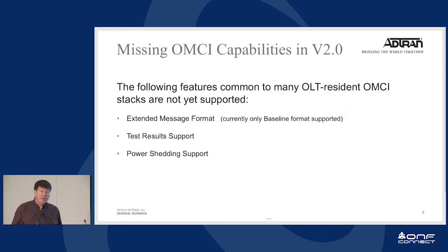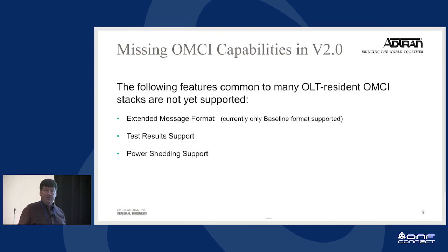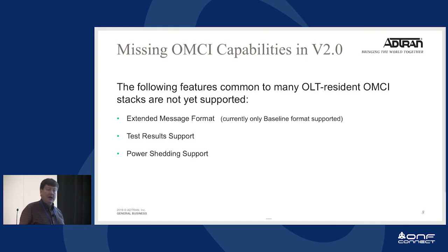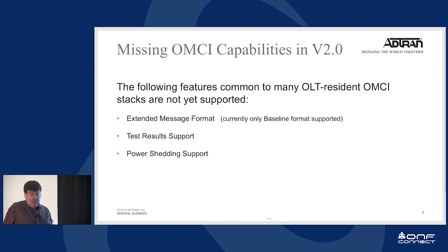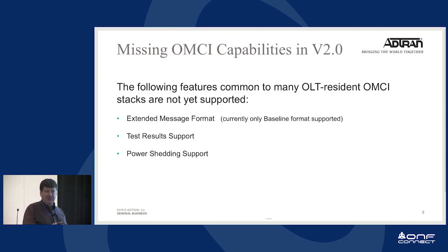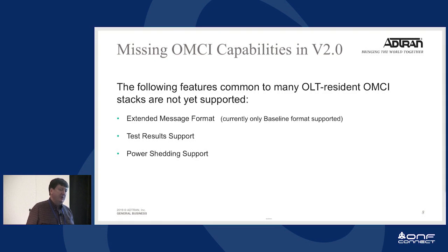Software download and activation is the ability to download new firmware to the ONU device, then commit that software, activate it, or do a rollback. If you need to download new ONU firmware to a physical device, you'd use those sequences. That's a common thing you might want to modify if your ONU has better capabilities. The ITU specifications actually give two different ways to do downloads — CIG implemented one of those for the current release, and that's what we're providing in the initial release of OpenOMCI.